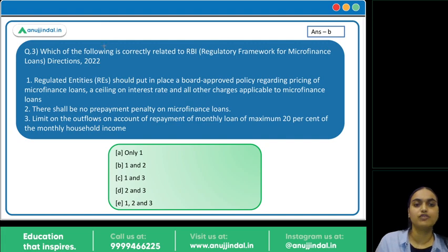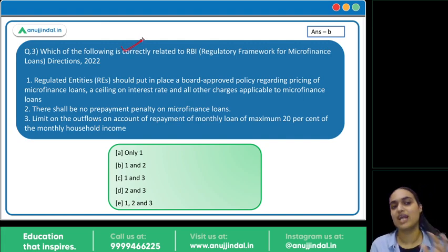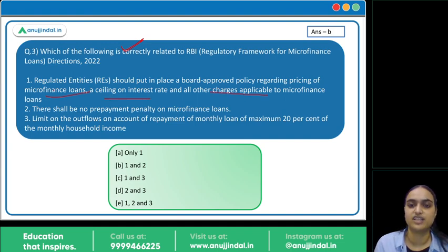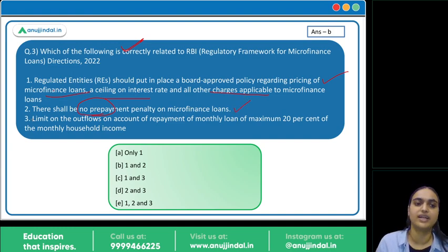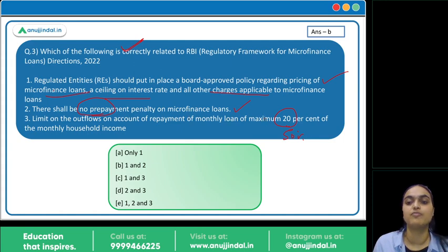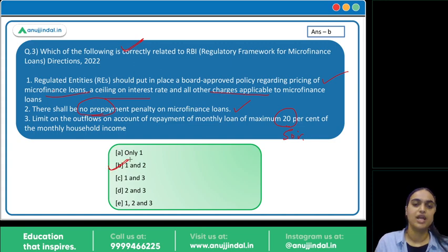Third question: which of the following is correctly related to the microfinance directions? Statement one: regulated entities should have a board-approved policy for loan pricing and interest rate ceilings — correct. Statement two: there shall be no prepayment penalty on microfinance loans — correct. Statement three: limit on repayment outflows is a maximum of 20% of monthly household income — incorrect; it is 50%. So statements one and two are correct, and the answer is option B.